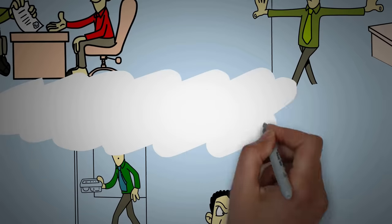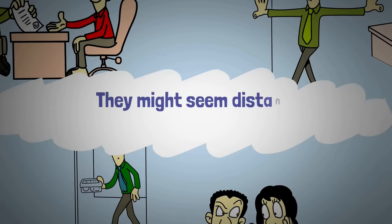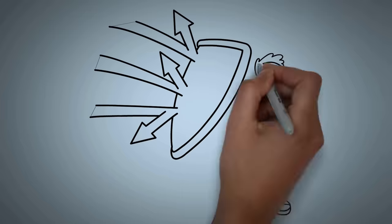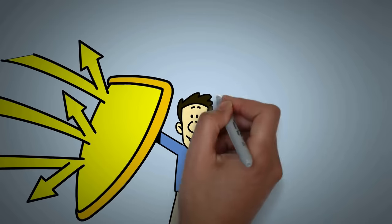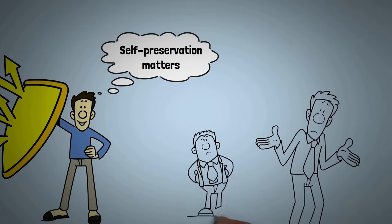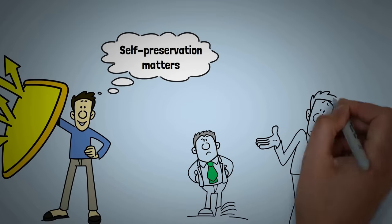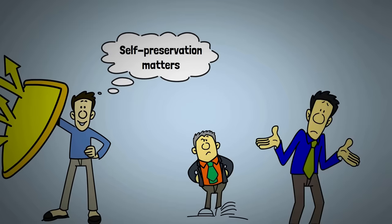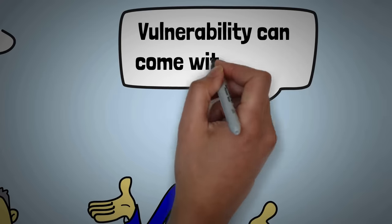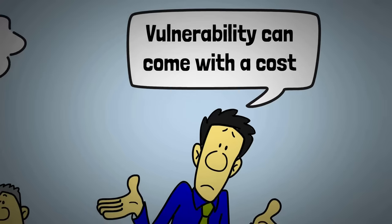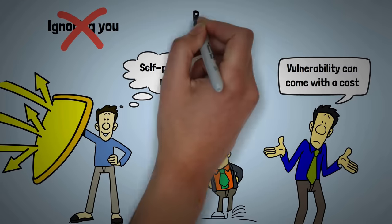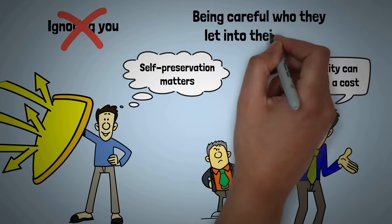And during that time, they might seem distant, like they're keeping you at arm's length. They're not being mean. They're just protecting themselves. They've learned that self-preservation matters. It's not about shutting people out. It's about making sure they don't get hurt like that again. They've learned the hard way that vulnerability can come with a cost, and they're not in a hurry to pay that price again. It's not about ignoring you. It's about being careful who they let into their world.